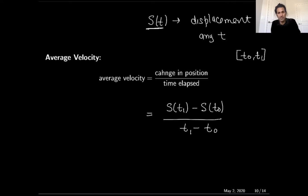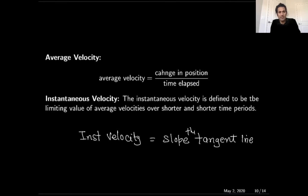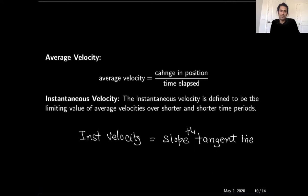Instantaneous velocity is the limiting value of the average velocity — the limiting value of average velocity over shorter and shorter periods of time. To calculate instantaneous velocity, we calculate the slope of the tangent line, because the slope of the tangent line is the limiting value of the slope of the secant line. The slope of the secant line gives us average velocity, and the slope of the tangent line gives us instantaneous velocity.